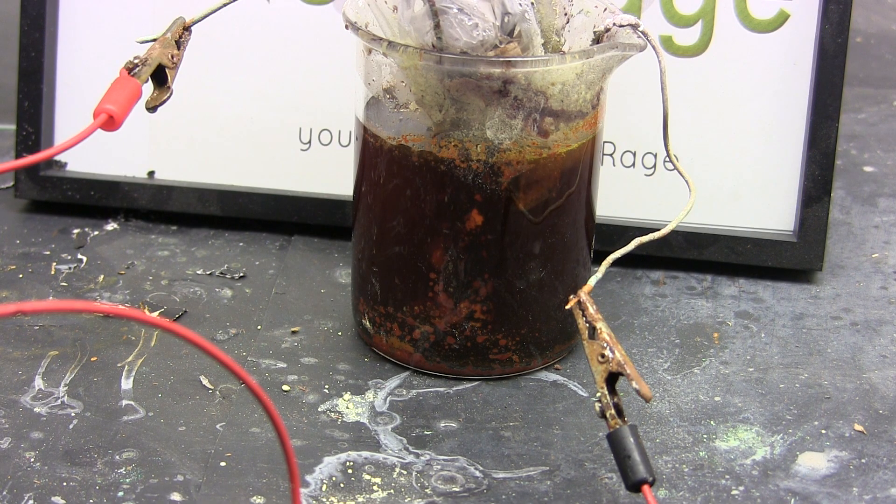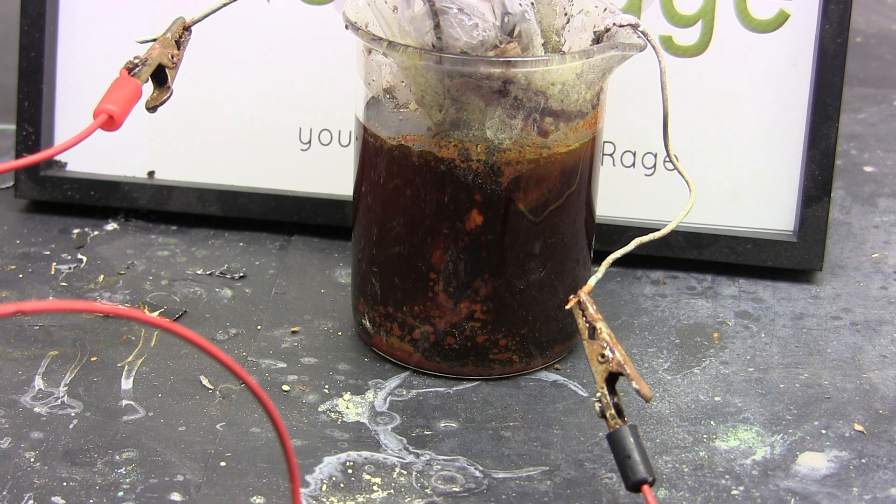Since I started with 16g of sulfur and used a current of about 2 amps, I ran the electrolysis for a total of 40 hours.